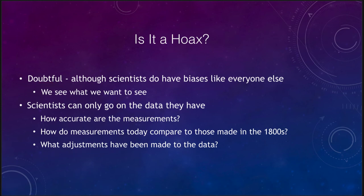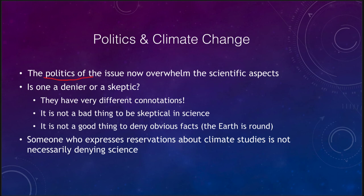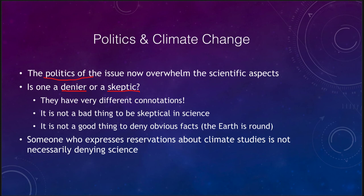What has really happened is that this has become a political issue more than a scientific issue. The scientific issue is determining what the temperature is doing and how we can model that over time, while politics in many cases completely overwhelm the scientific aspect. You often hear the terms 'denier' or 'skeptic' — sometimes used interchangeably, sometimes used by one side in the political argument against another. Those who favor man-made climate change will call those who disagree 'deniers,' while those who disagree may call themselves 'skeptics,' and there are very different connotations with either of those.